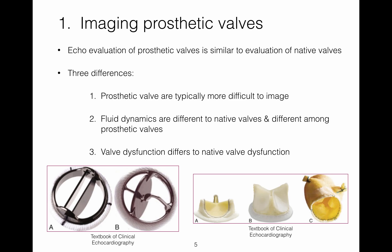Evaluation of prosthetic valves by echocardiography is similar to the evaluation of native valves and involves both 2D and Doppler methods. The three main differences are: 1. Prosthetic valves are typically more difficult to image, especially with 2D. 2. The fluid dynamics are different to native valves and are different among prosthetic valves. 3. Valve dysfunction differs to native valve dysfunction.